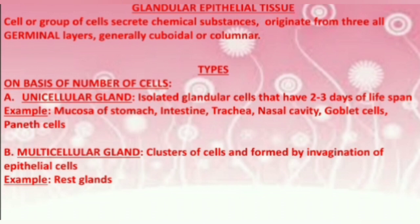On the basis of the number of cells, glands can be unicellular or multicellular. Examples include the trachea, nasal cavity, and the red-crested glands.